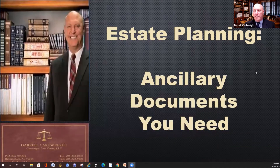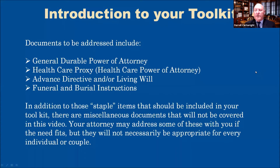The ancillary documents we're going to talk about today are principally four: a general durable power of attorney, a health care proxy or health care power of attorney, an advance directive or living will, and a funeral and burial instructions document. In my mind, those are the four staple items that need to be included in every good estate plan in Alabama.